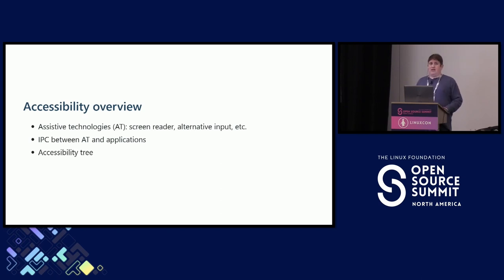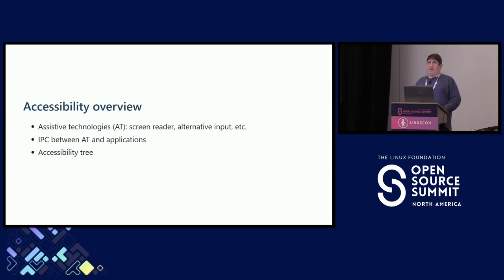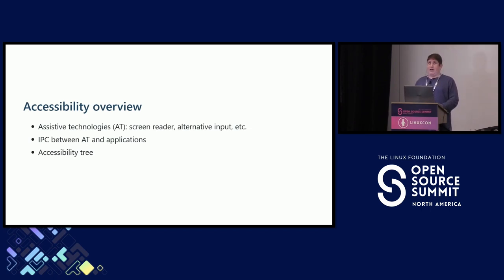A key concept in accessibility is the accessibility tree. If you're familiar with the HTML document object model, or DOM, it's a similar concept. You have a hierarchy of nodes, starting with the application window typically as the root. You might have layout containers such as GTK HBox or VBox objects in the tree, and then you have typically text labels and controls such as buttons, checkboxes, sliders, etc., as your leaf nodes.